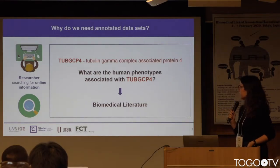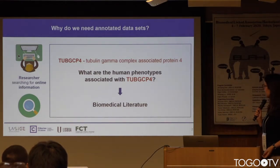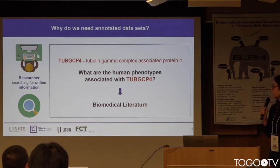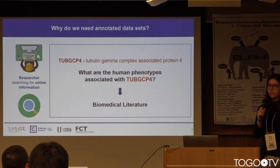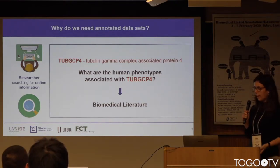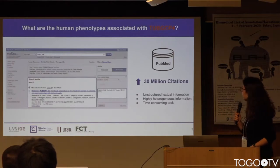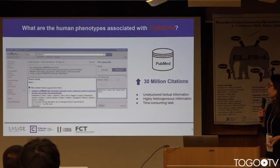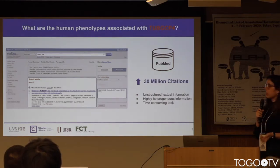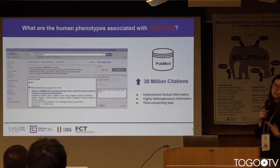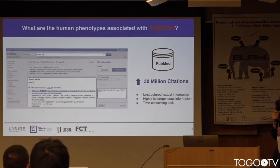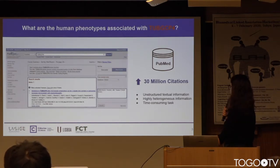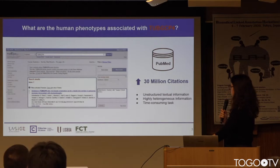The motivation is about the same as the previous figure. We want to know which phenotypes are associated with certain genes, and we need to go through biomedical literature to have that information. The problem is that we have a lot of literature, and if you are interested in more than one pair or one relation, you have to go through many articles. Most of this information is unstructured and heterogeneous and takes a lot of time.